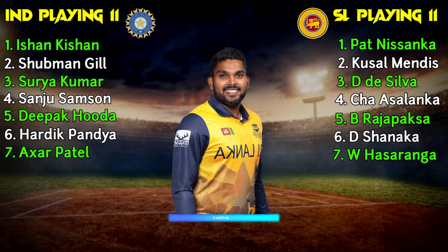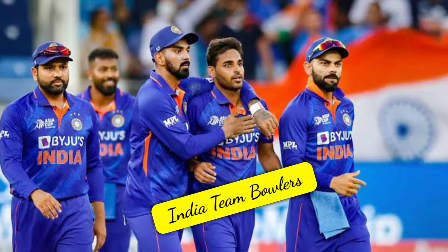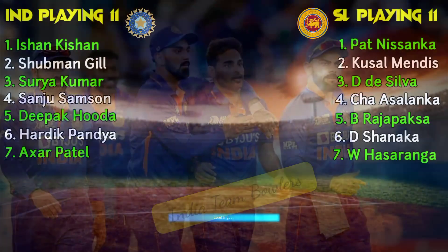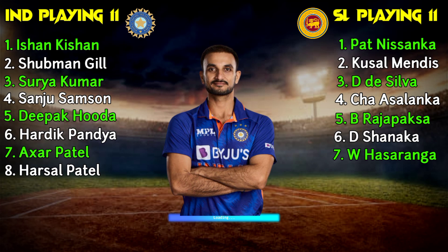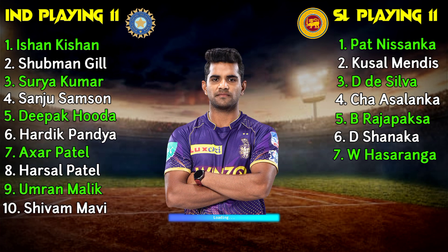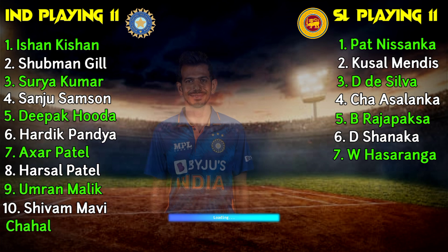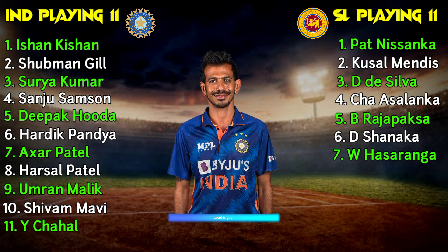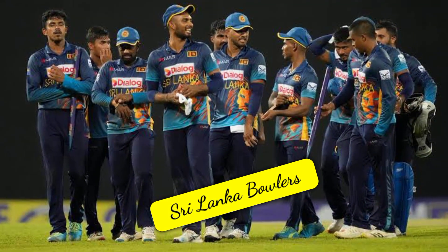Sri Lanka middle order: number seven Wanindu Hasaranga, all-rounder. India team bowlers: number eight Harshal Patel, fast bowler; number nine Umran Malik, fast bowler; number ten Shivam Mavi, fast bowler; number eleven Avesh Khan, fast bowler.